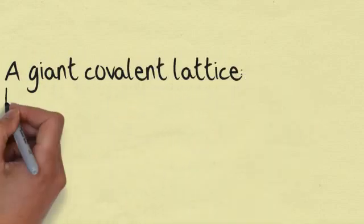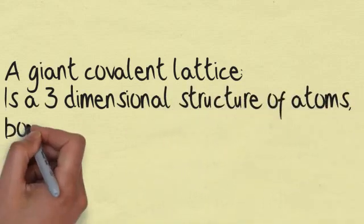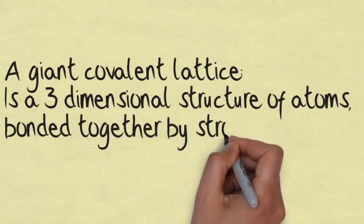A giant covalent lattice is a three-dimensional structure of atoms bonded together by strong covalent bonds.